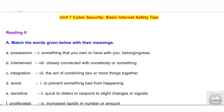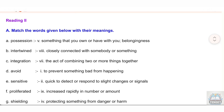Unit 7: Cyber Security — Basic Internet Safety Tips. Reading 2A: Match the words given below with their meanings. A: possession — something that you own or have with you. B: intertwined — closely connected with somebody or something. C: integration — the act of combining two or more things together.